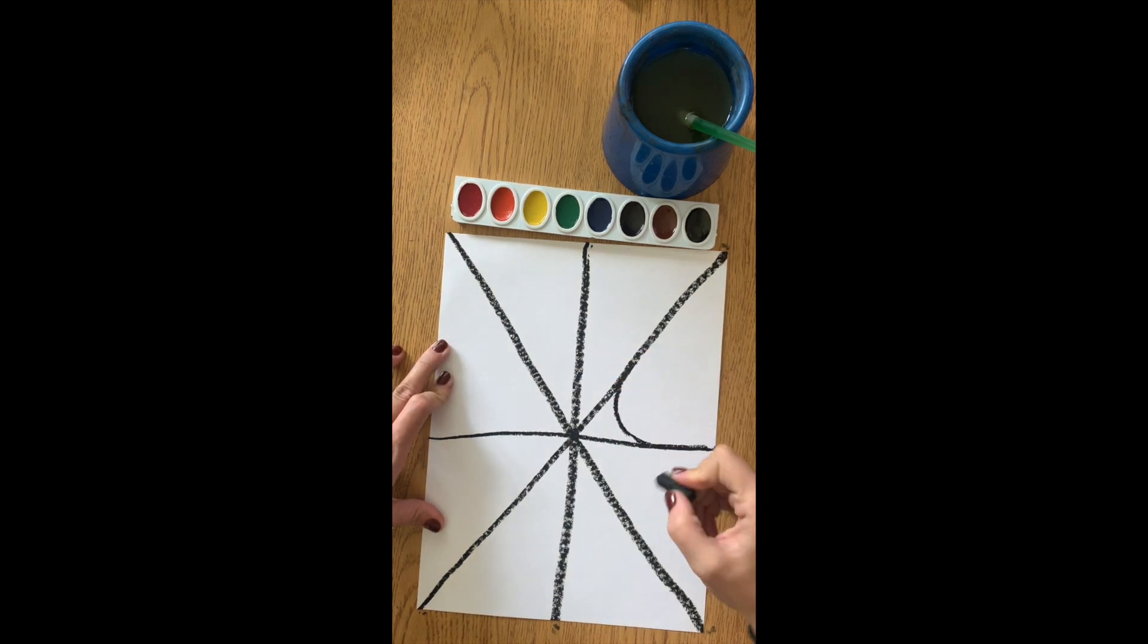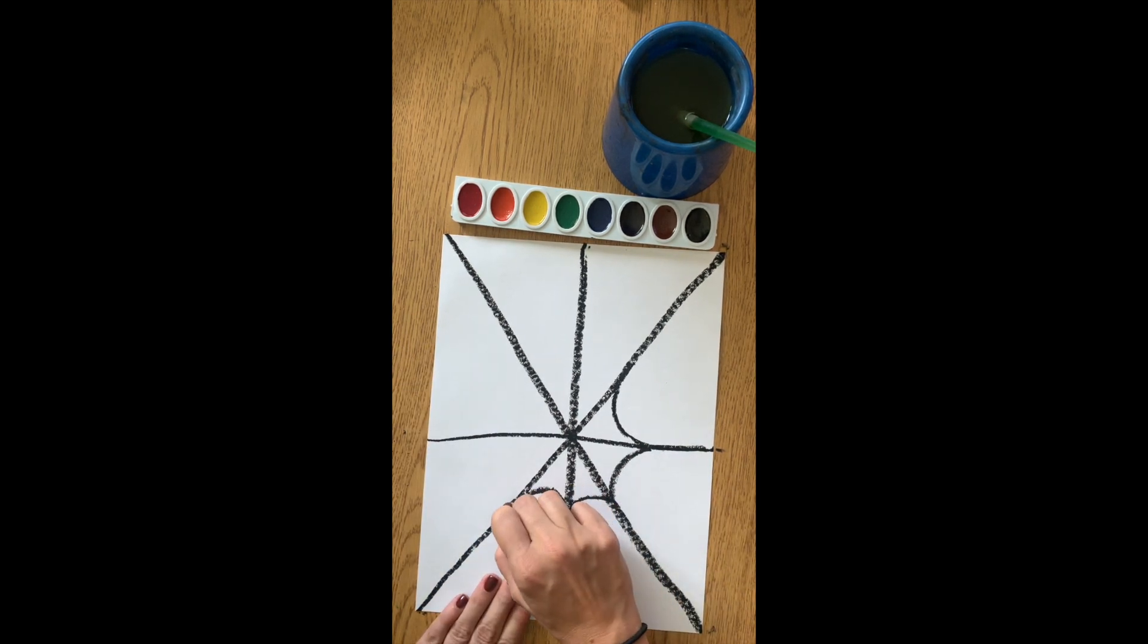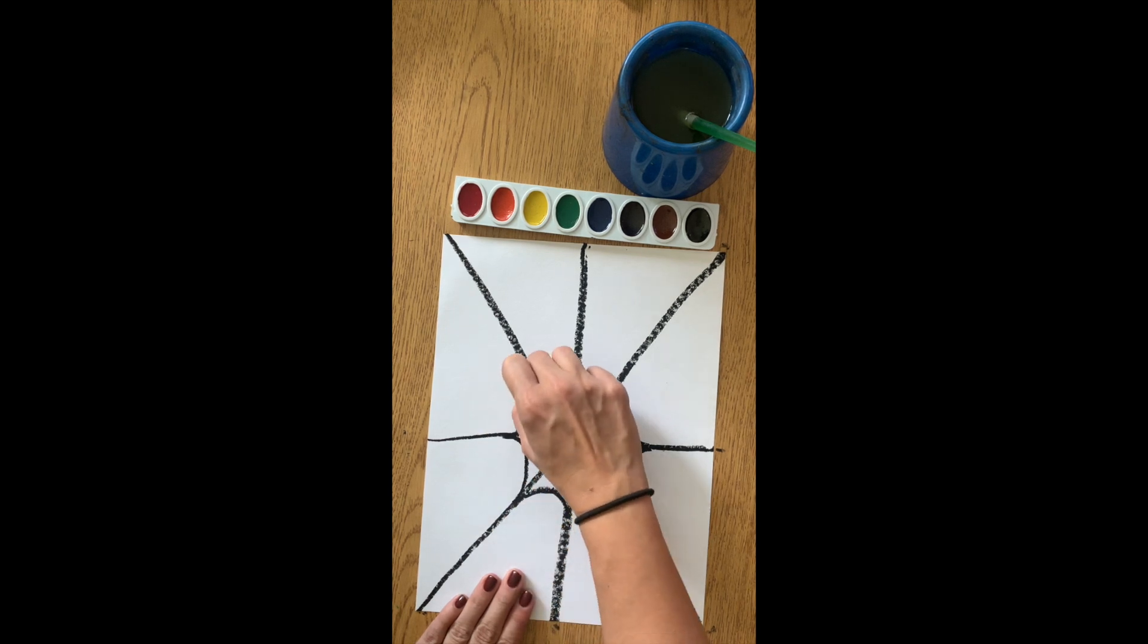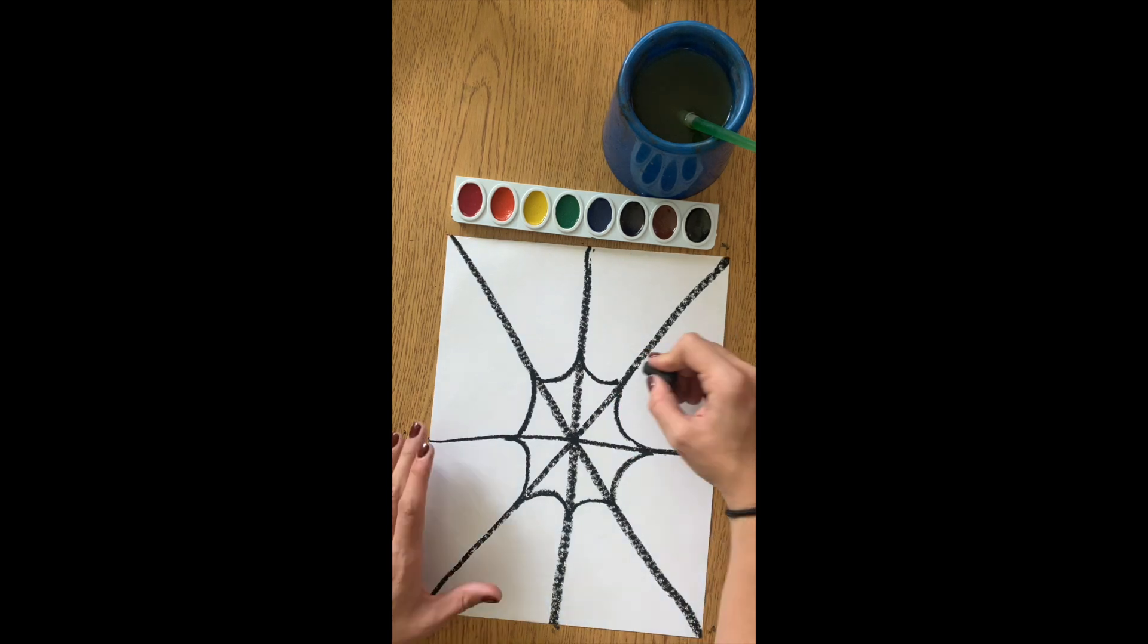Now, we are going to make smile shapes. They should be going down and connecting all the way around our spider web. Do about 3 or 4 rows of this style of line.